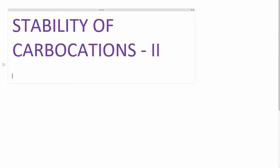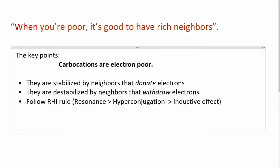Welcome to the tips and tricks of chemistry, part 2 of stability of carbocations. This saying holds true for the stability of carbocations: when you are poor, it's good to have rich neighbors. Carbocations are electron deficient, so they get stabilized by electron donating groups and destabilized by electron withdrawing groups.